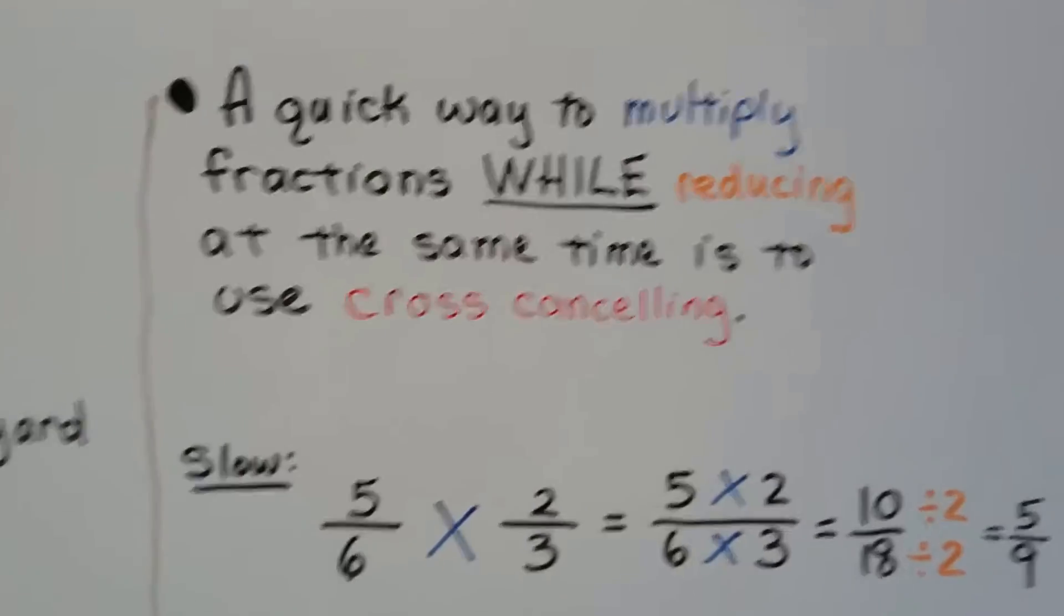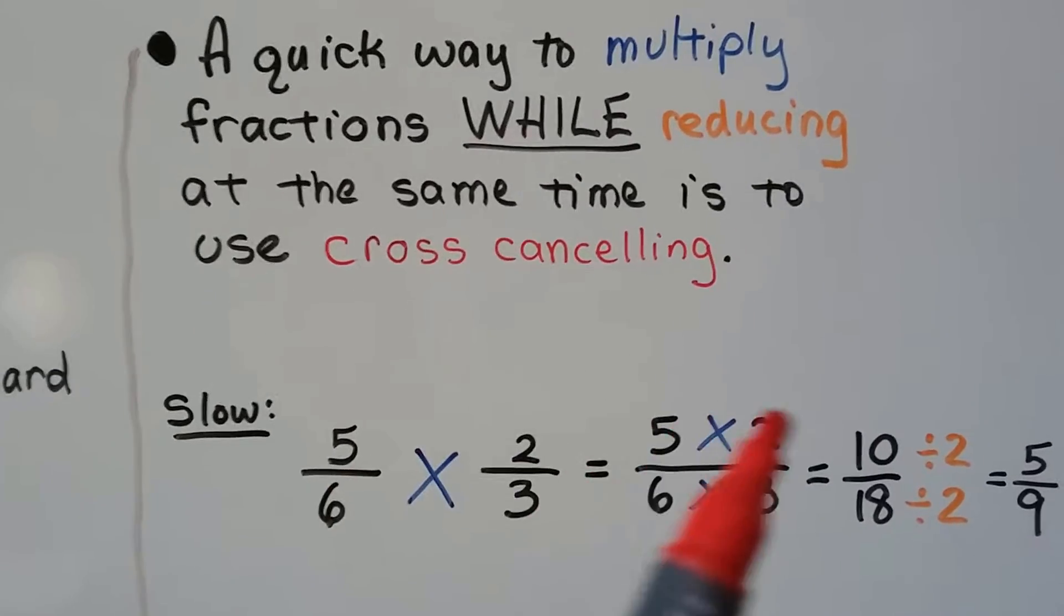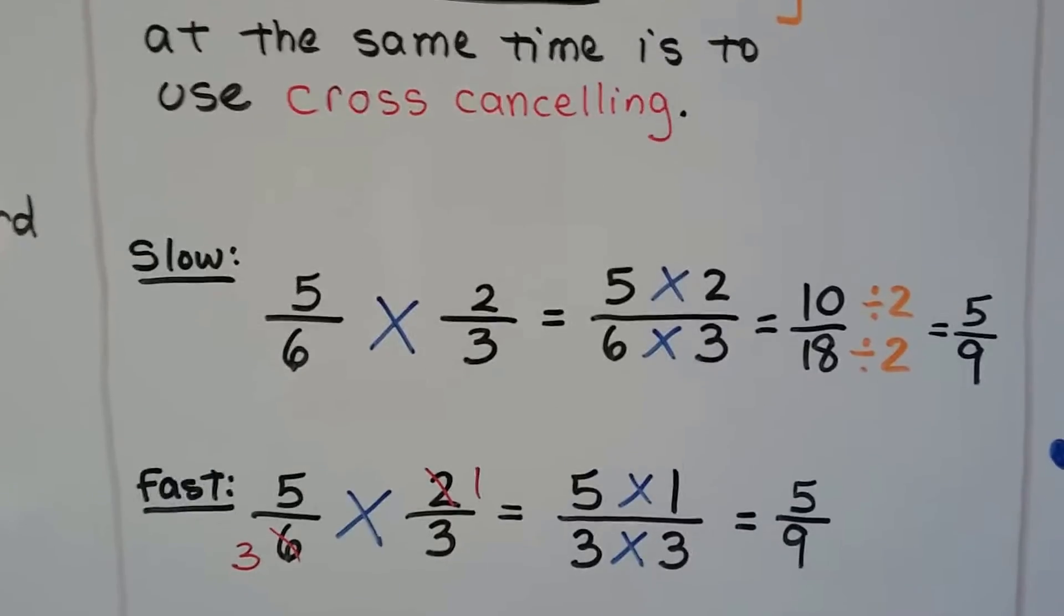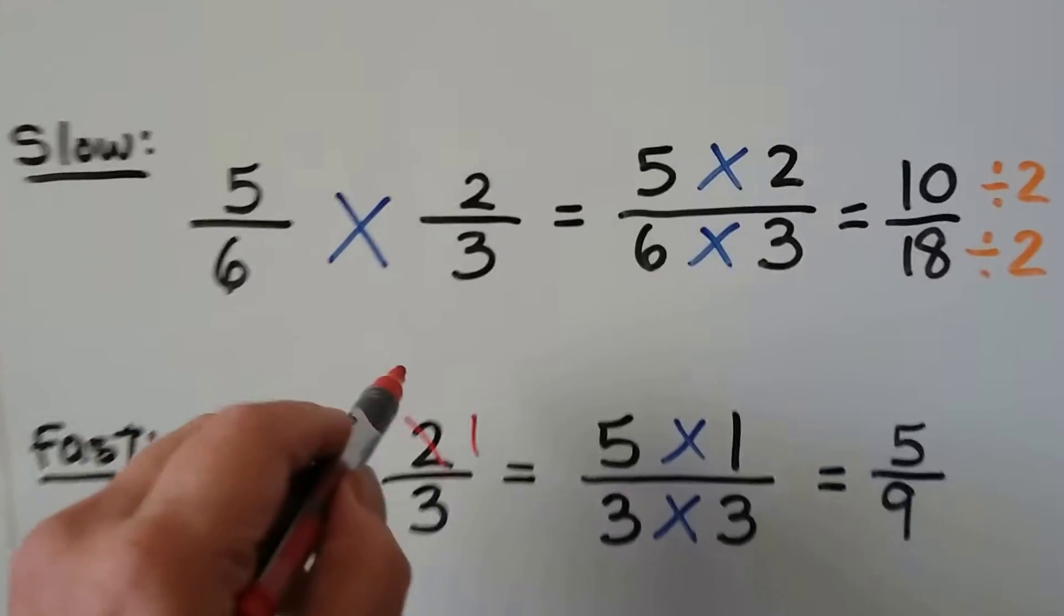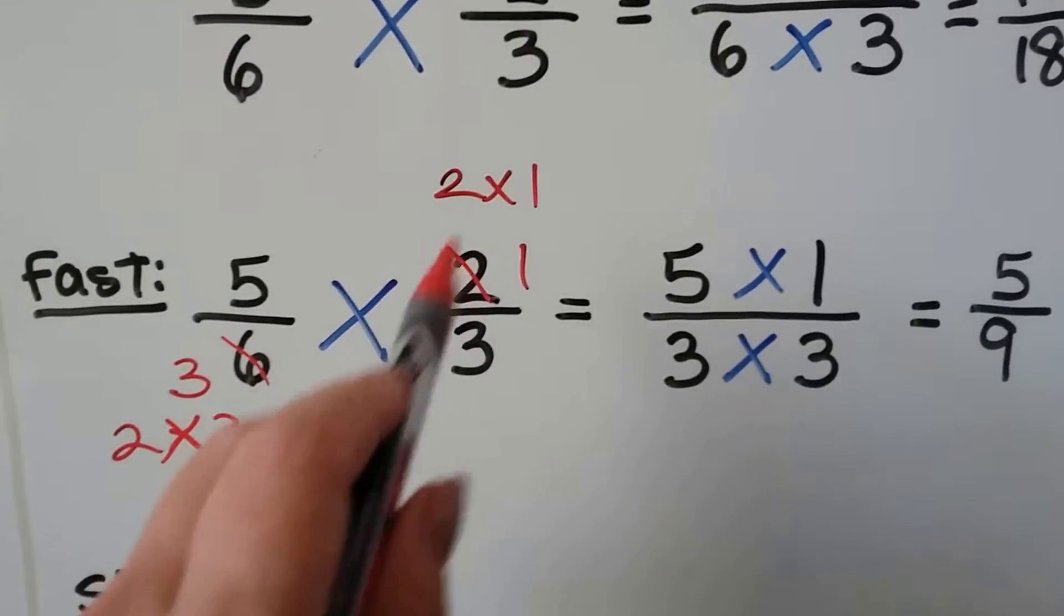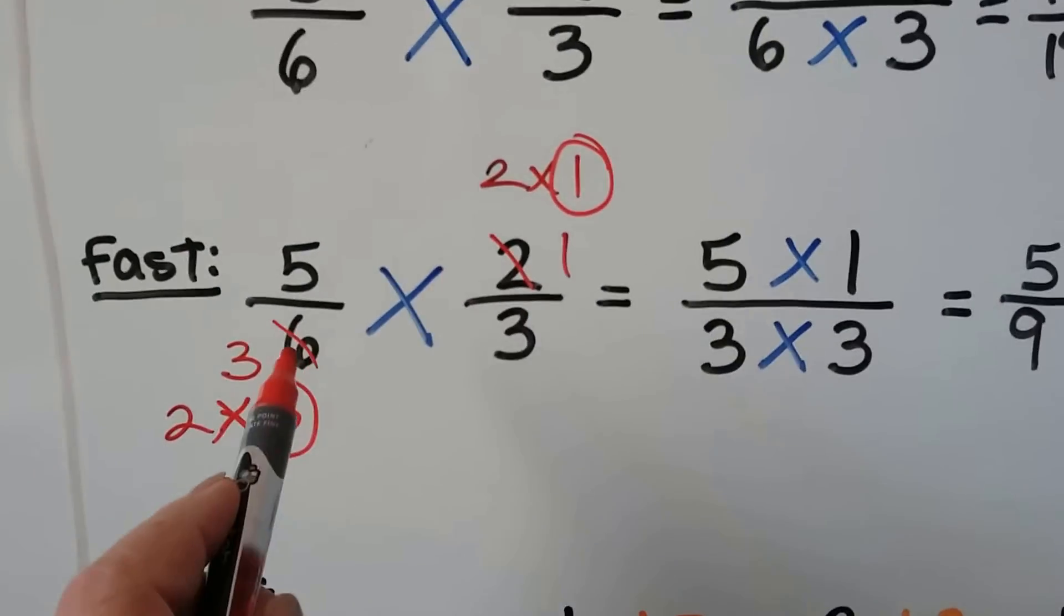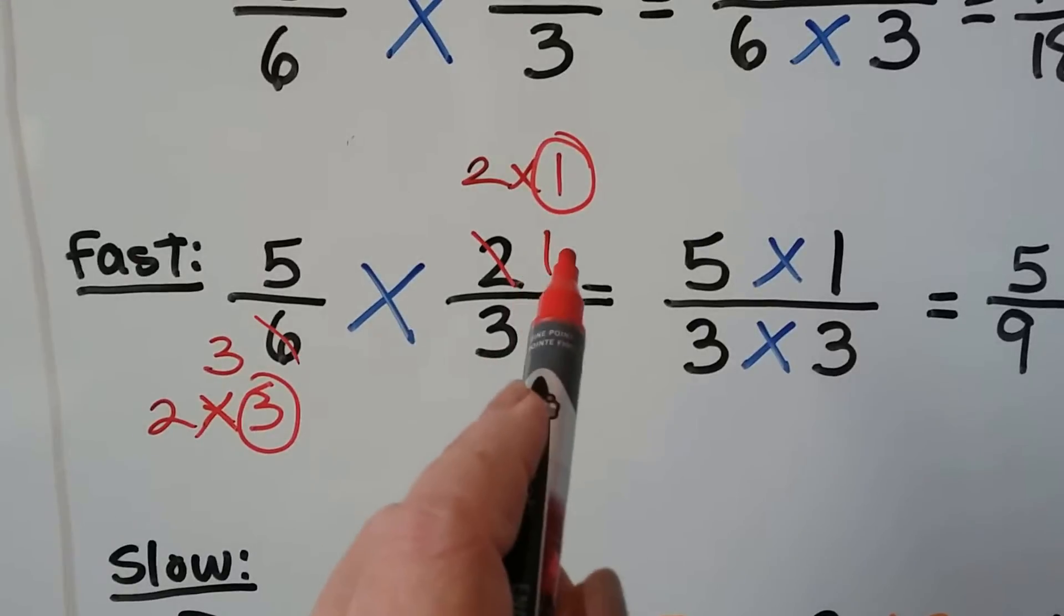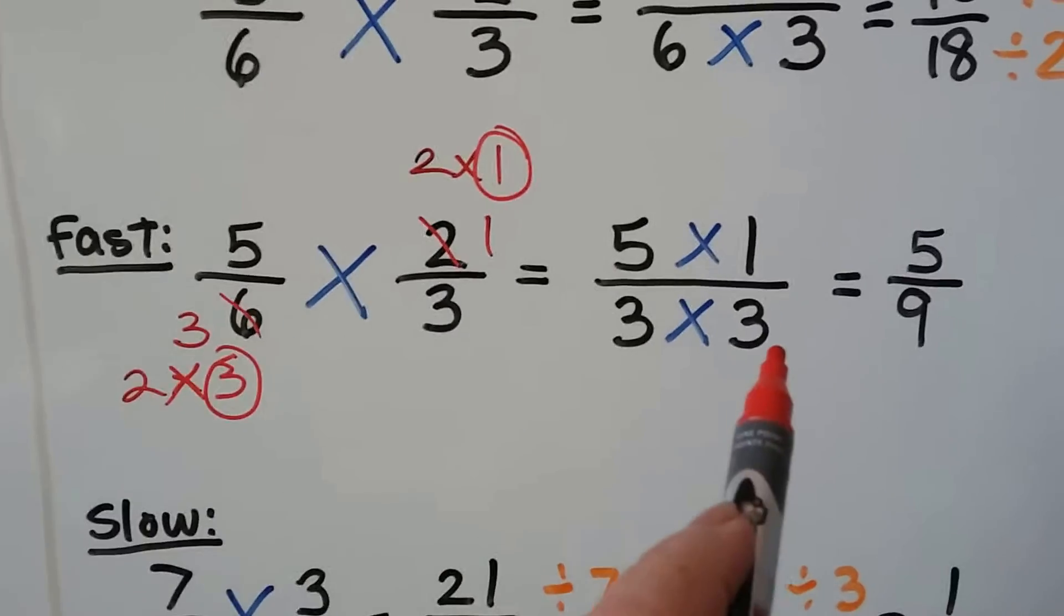A quick way to multiply fractions while reducing at the same time is to use cross-canceling. This is my favorite. If we have 5/6 times 2/3, well, we could do the 5 times 2 is 10 and the 6 times 3 is 18 and then divide them both by 2 and get a 5/9. Or we could go much quicker and just do cross-canceling. What we're doing is we're seeing that the 2 is a 2 times 1 and the 6 is a 2 times 3. So they have a 2 in common. So we take the 3 and we take the 1. We say, how many times can 2 go into 6? 3 and it goes into 2 a 1 time. So we cross the 6 out and make it a 3. We cross the 2 out and make it a 1 because there's 1 two in 2 and 3 twos in 6.